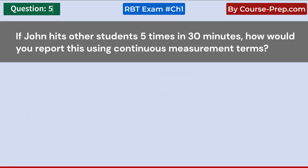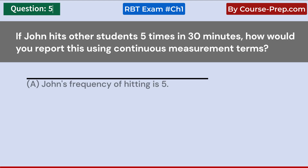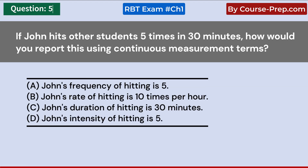If John hits other students 5 times in 30 minutes, how would you report this using continuous measurement terms? A. John's frequency of hitting is 5. B. John's rate of hitting is 10 times per hour. C. John's duration of hitting is 30 minutes. D. John's intensity of hitting is 5. Answer B: John's rate of hitting is 10 times per hour.